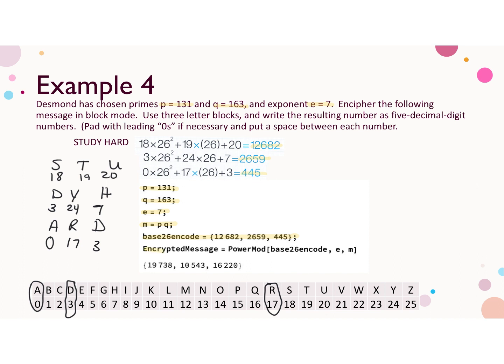The base 26 encode values that we calculated from above are there. And then the encrypted message, so I've created a variable called encrypted message, is going to be the base 26 encode values, all those values on the list, to the e power mod m, and power mod is the command for that. And here are our results. So that is the encrypted message that we will send for study hard.